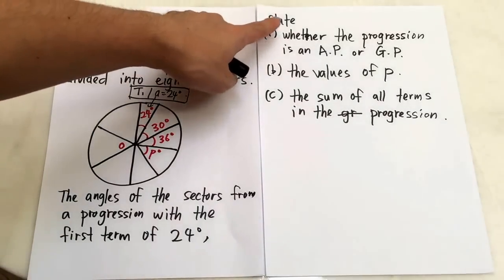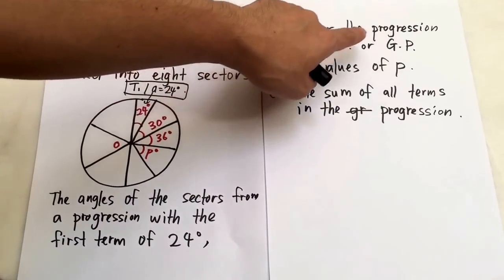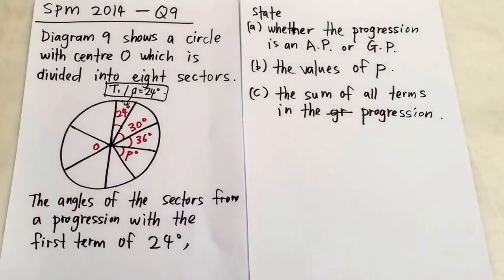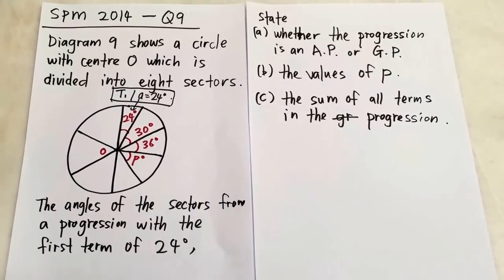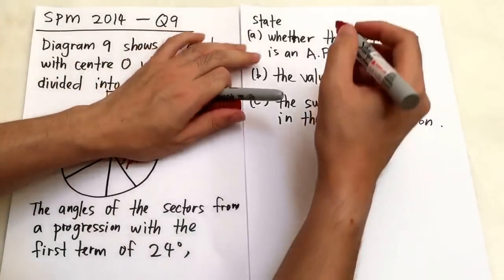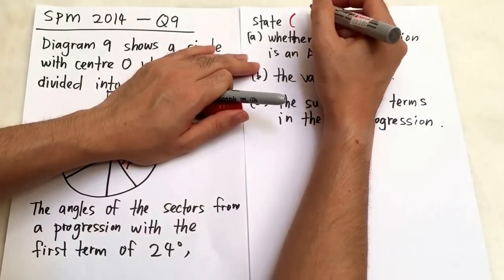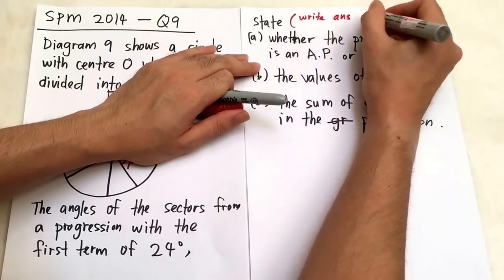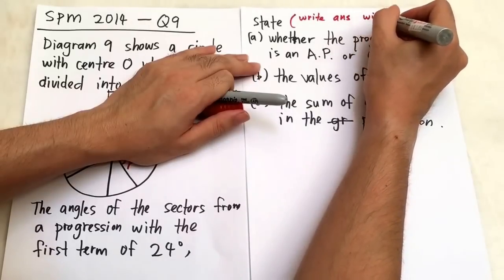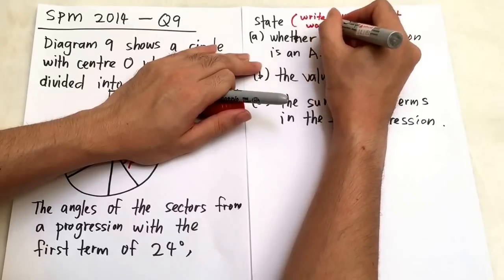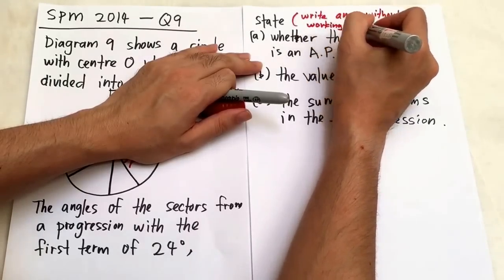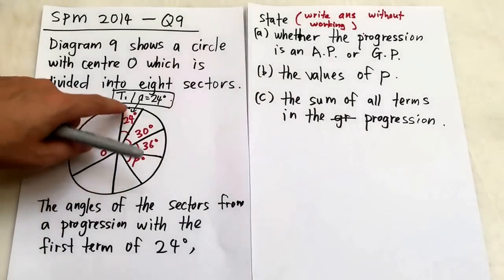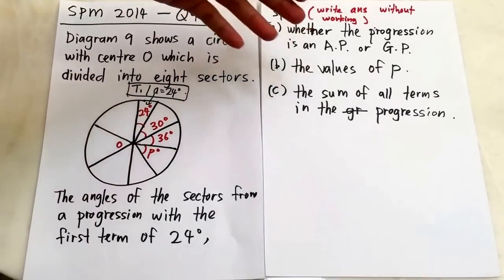The question asks you to state whether the progression is arithmetic progression or geometric progression. Whenever you see the word 'state' in SPM, it means you can write the answer without showing working — normally it's just a one-mark question. So obviously, this one is arithmetic progression.